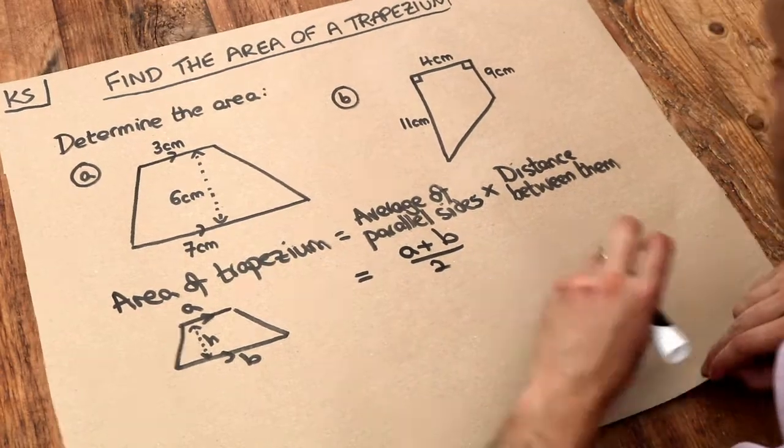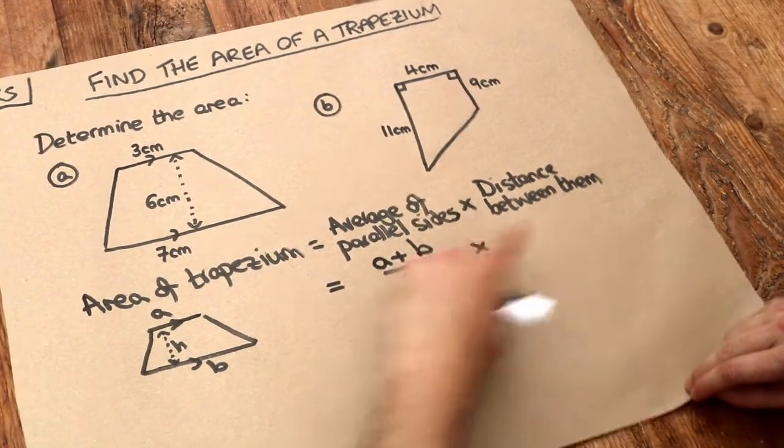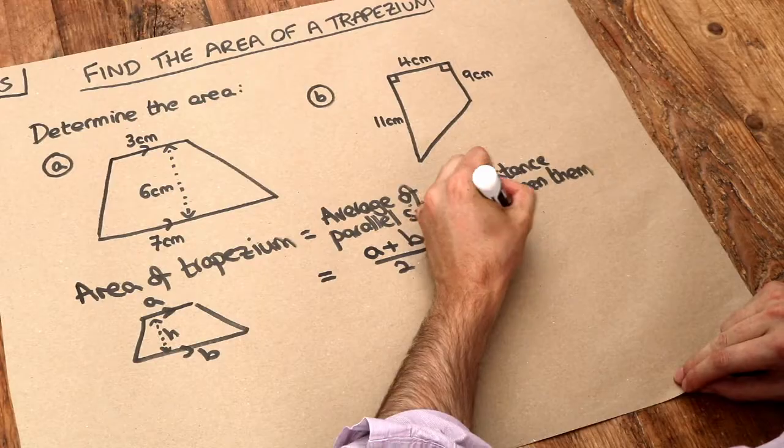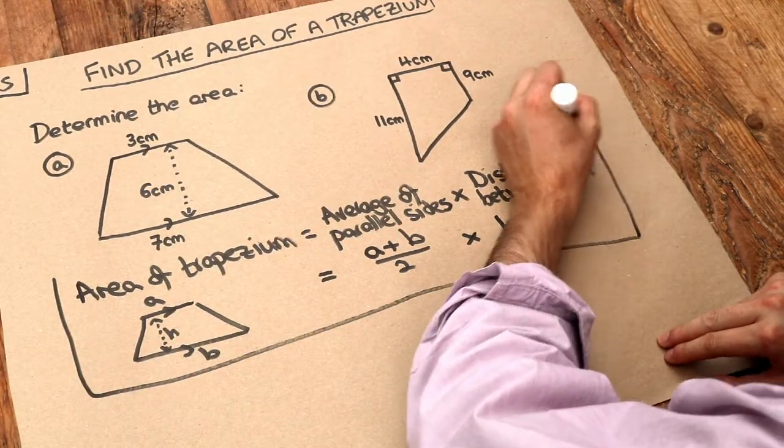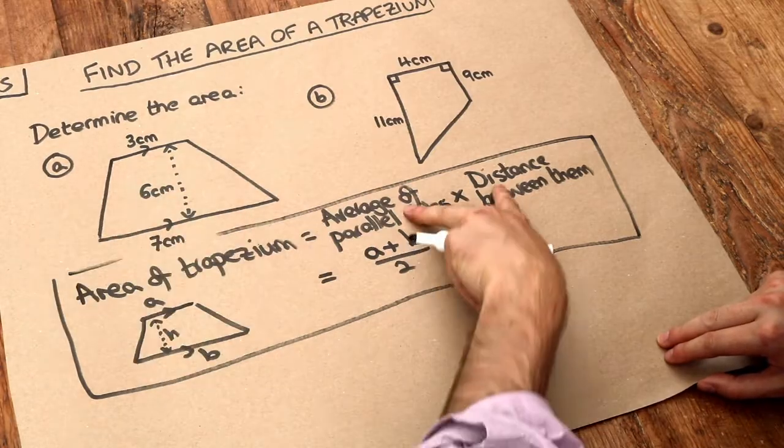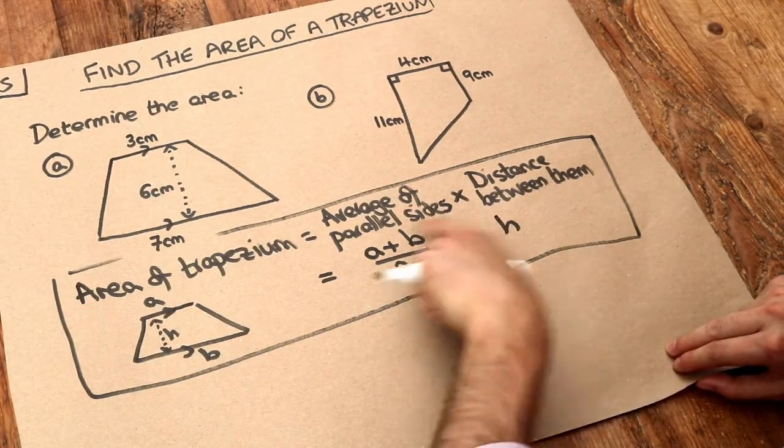And then you times by the distance between them which in this case is h. So that's your formula for the area of trapezium but I think it's easier to remember this description of the formula rather than this actual formula here.